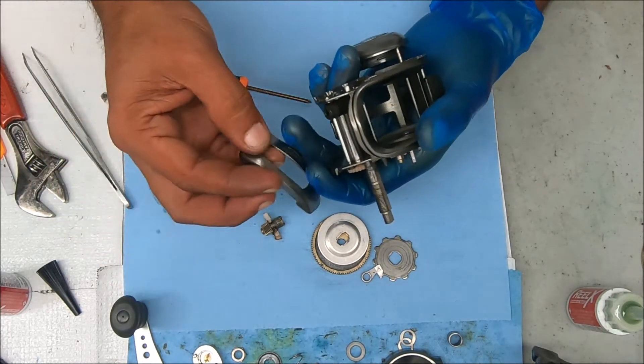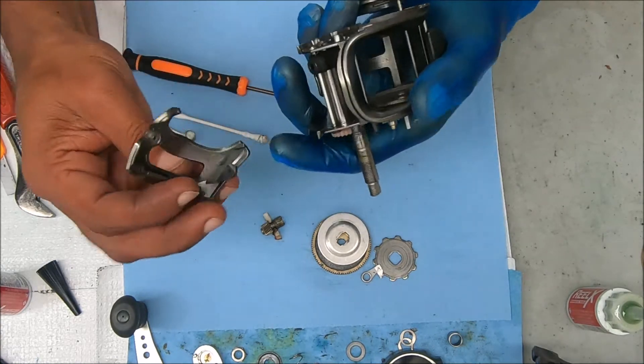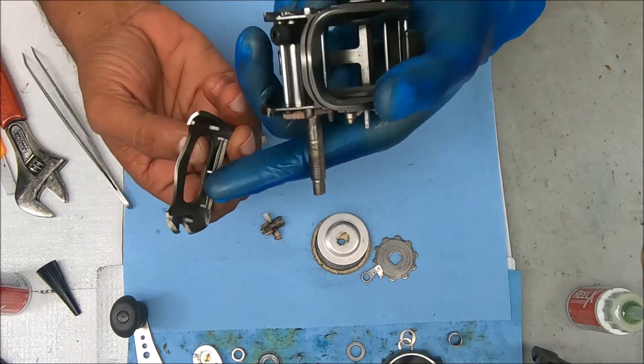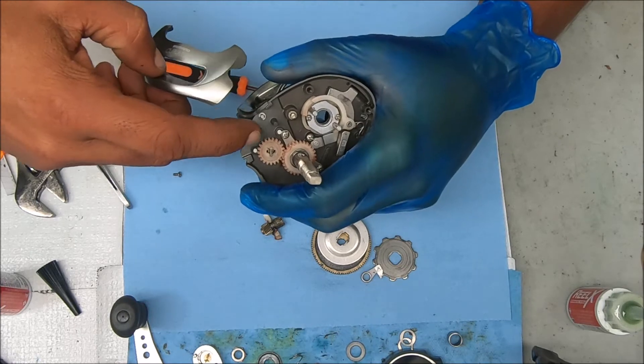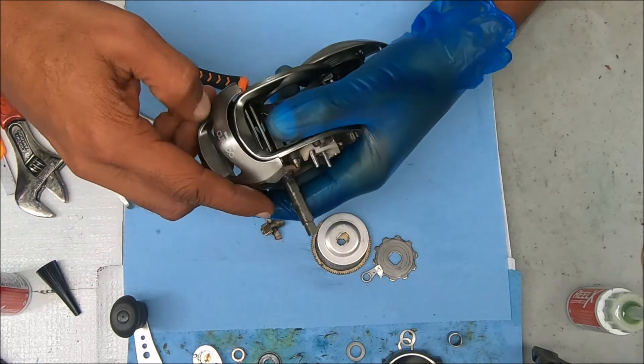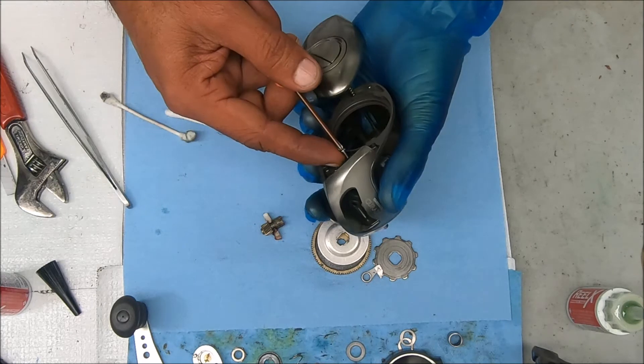So before we forget, let's go ahead and put this cover back on. You're going to line that side up and that side up with that post there and that post. Then re-secure it with the screw.